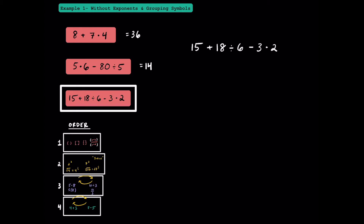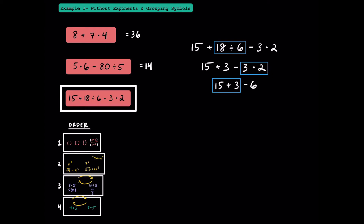Pause the video and see if you can tell which operation should come first. If you were thinking division, good job. While division and multiplication are equally important, the division comes first in the problem reading left to right. 18 divided by 6 is going to be 3. Between the remaining three operations, multiplication is going to come first, and 3 times 2 is 6. Since addition and subtraction are equally important, we'll add 15 plus 3. With one operation left, we'll subtract 18 minus 6 to get 12. This is the value of this expression.